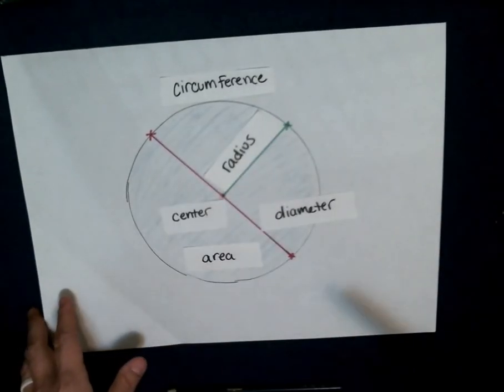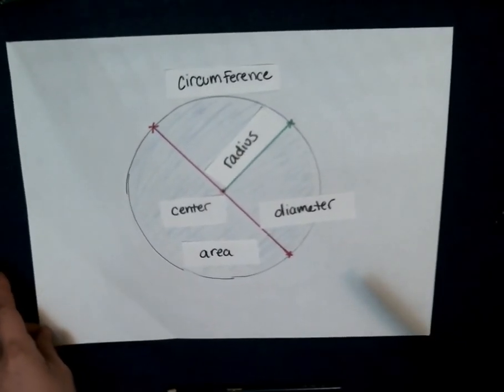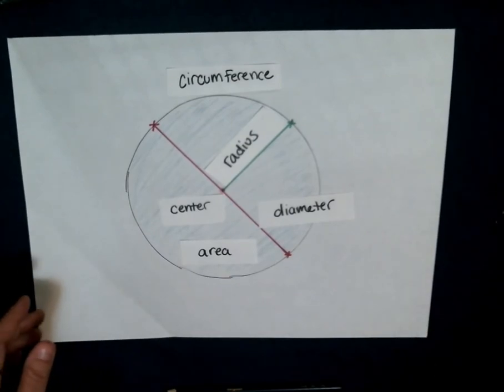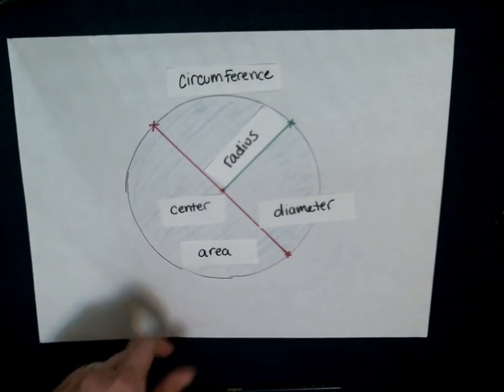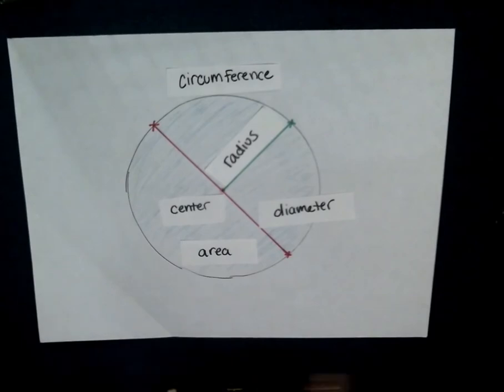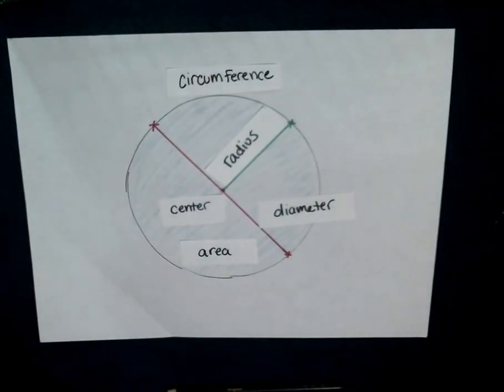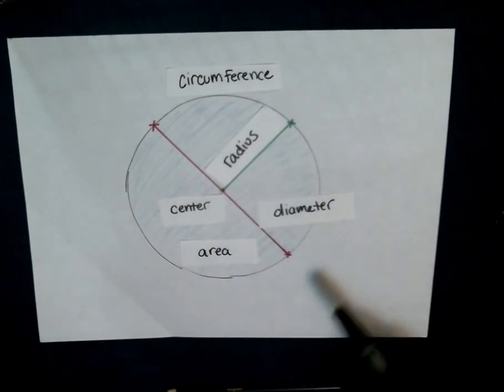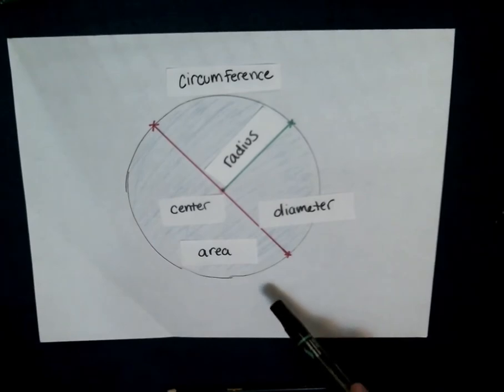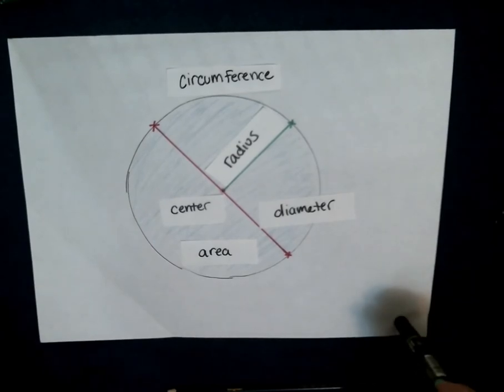So these are the big parts that I wanted to talk to you about and that I really want you to practice so that we can start working on measuring the circumference. We know how to measure perimeters, right? We've got to learn how to measure a circumference, but these five words here: circumference, radius, diameter, area, and center, it's important that you know these terms.